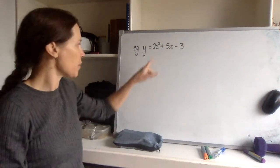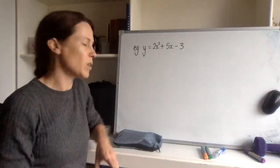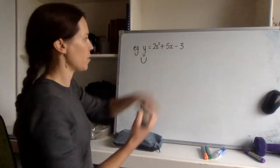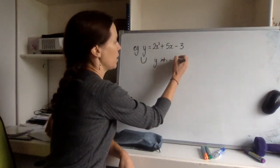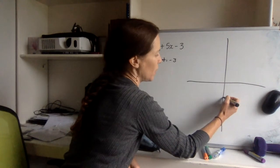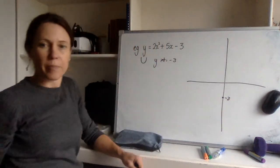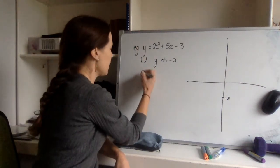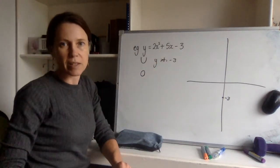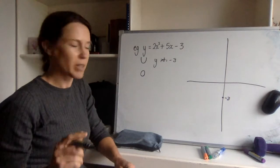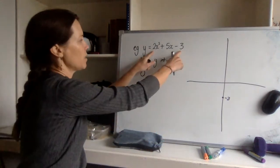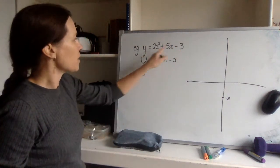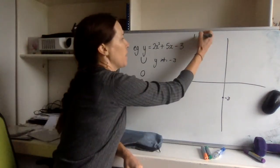This next example is non-monic — we've got a two in front of our x squared instead of a one. That two is positive, so it's going to be upright, and I can see the y-intercept is going to be negative three. Now I'm looking for x-intercepts, so I'll let y equal zero. I'm going to use the two-pairs method because most people in our class use that. We look for factors of negative six — I got negative six by multiplying two by negative three — and I want factors of negative six that add to five.